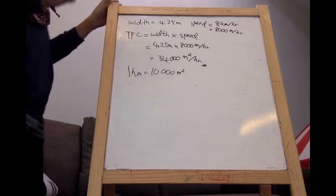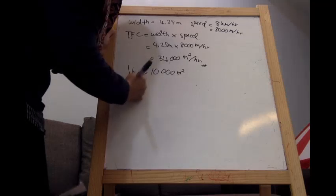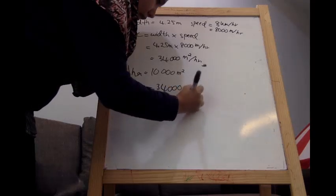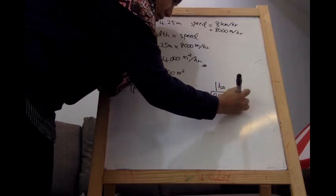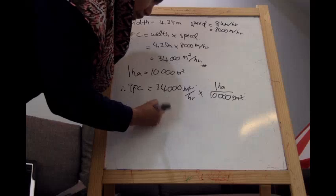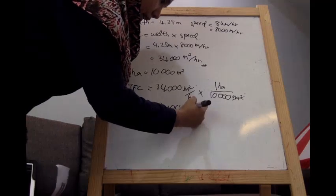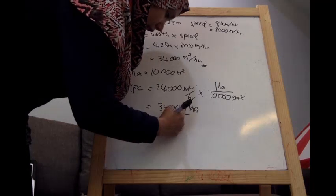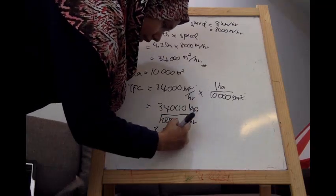Therefore, the TFC will be 34,000 meters squared per hour times one hectare over 10,000 meters squared. The meters squared symbols cancel out, leaving 34,000 over 10,000 hectares per hour, which gives us 3.4 hectares per hour.